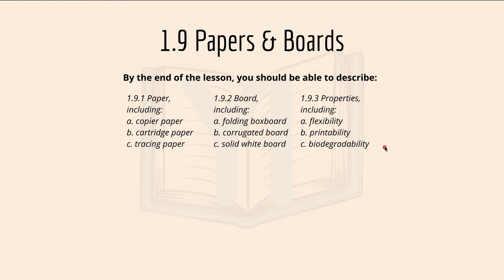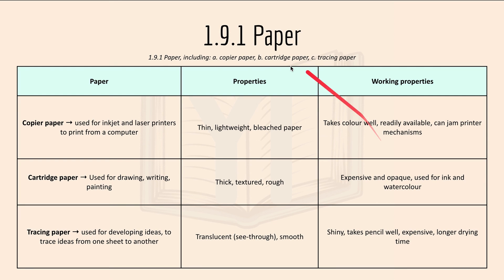Check out the pinned comment for all the timestamps and we'll move on with 1.9.1 paper. We'll talk about copier paper, cartridge paper, and tracing paper. Copier paper is used for inkjet and laser printers to print from a computer. The properties include thin and lightweight bleached paper. Working properties include it takes color well, it's readily available, and can jam printer mechanisms. Cartridge paper is used for drawings, writings, and painting.